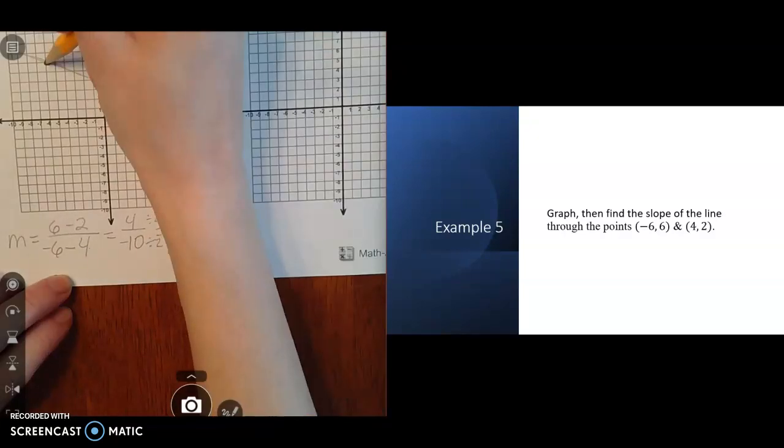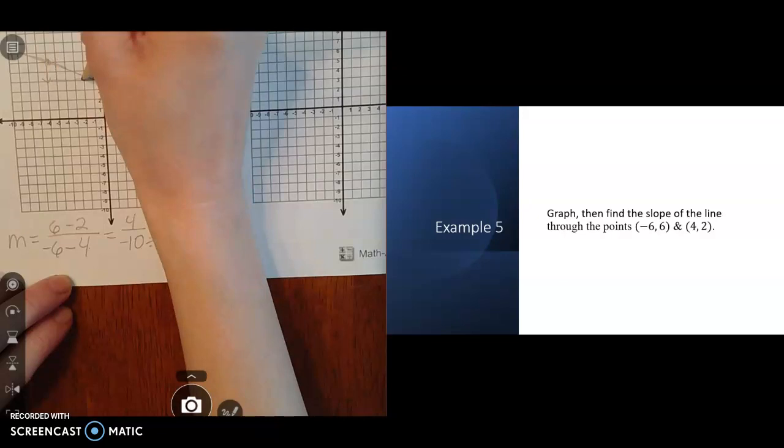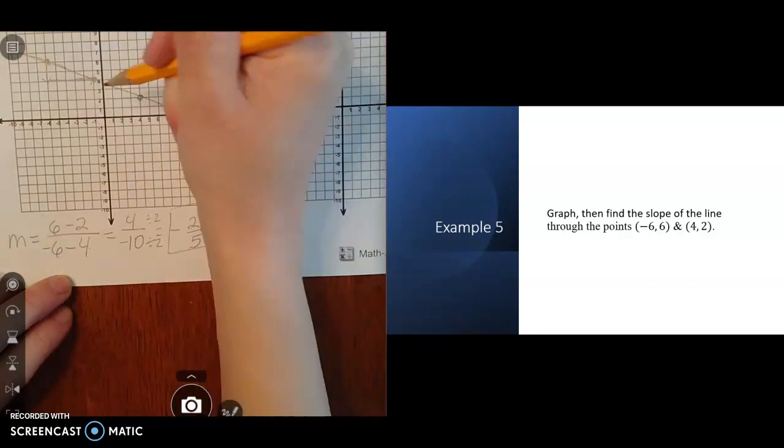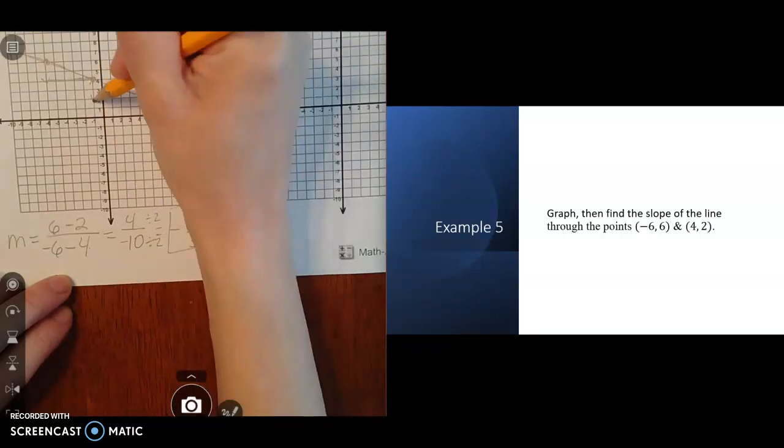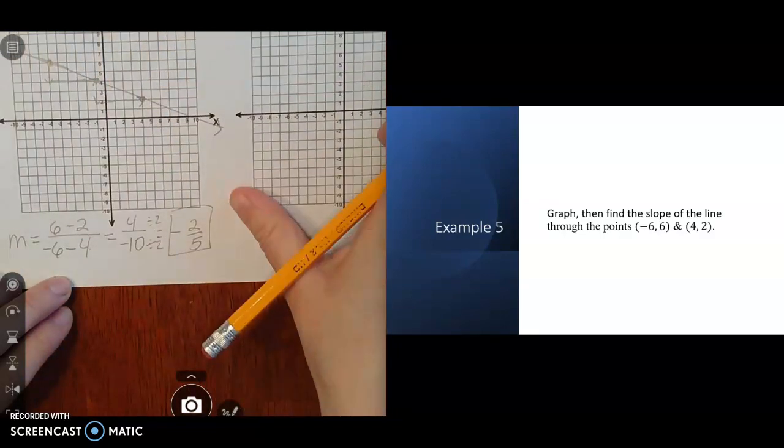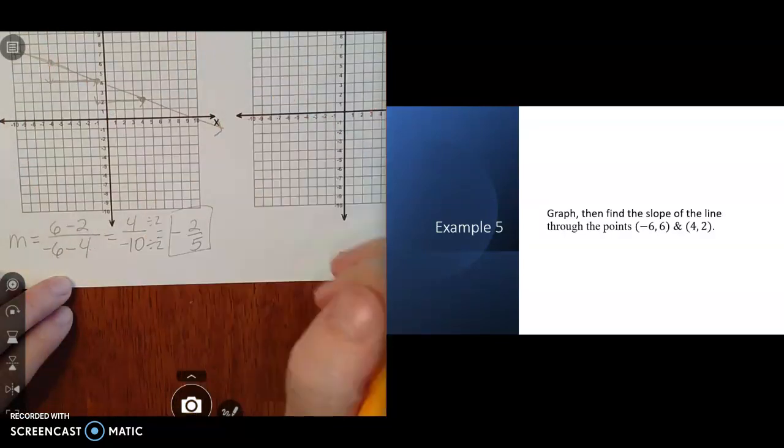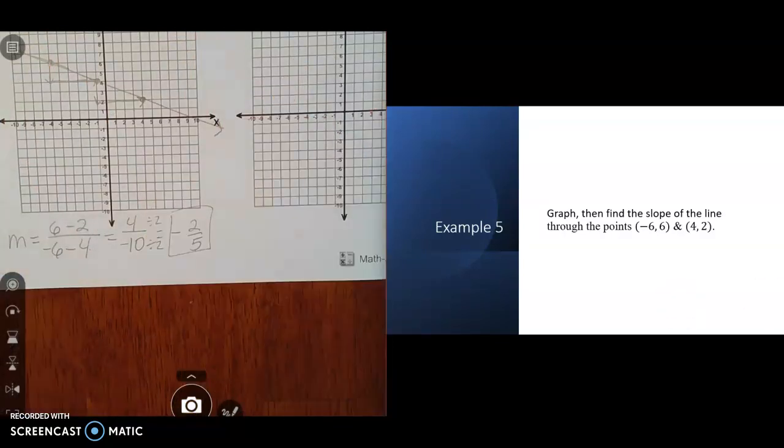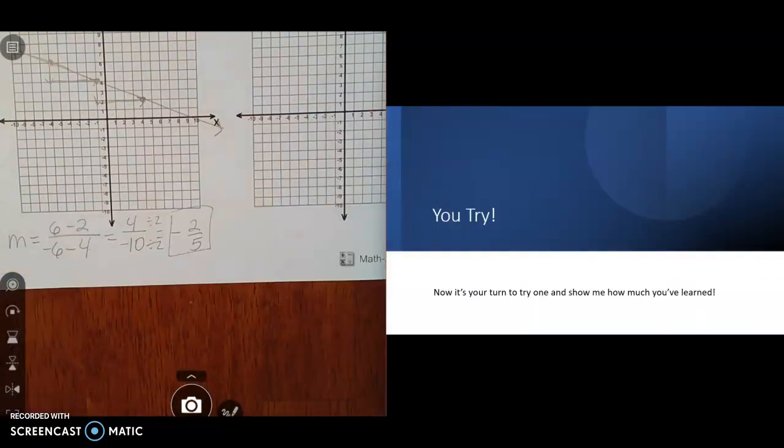If you notice, we go down 2 and over 1, 2, 3, 4, 5 to get to the next point. Down 2 and over 5 to get to the next point. That negative slope always goes down from left to right. Now it's your turn. You get to try one and show me what you've learned.